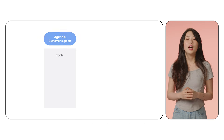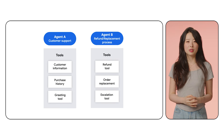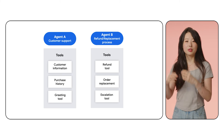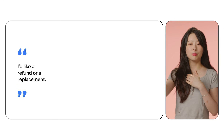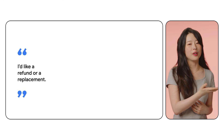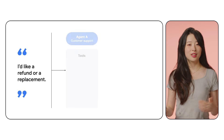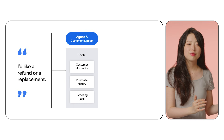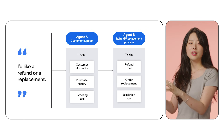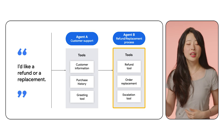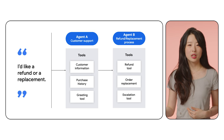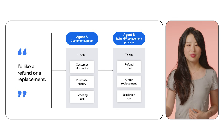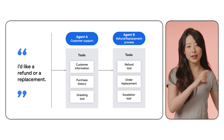The last part of today's video is an example of multi-agent evaluation. As you can see on the screen, we have two agents acting as customer service. Agent A handles customer support frontline, and Agent B handles refunds and replacements. When a user says 'I bought a smart device last week, it's not turning on, I'd like a refund or replacement,' Agent A greets the user, checks purchase history, and confirms the order — but Agent A can't process refunds. Its job is to hand off details to Agent B, which then processes the refund with its own tools.